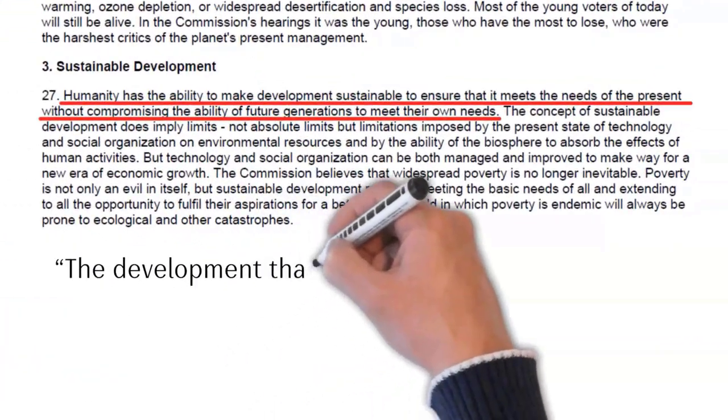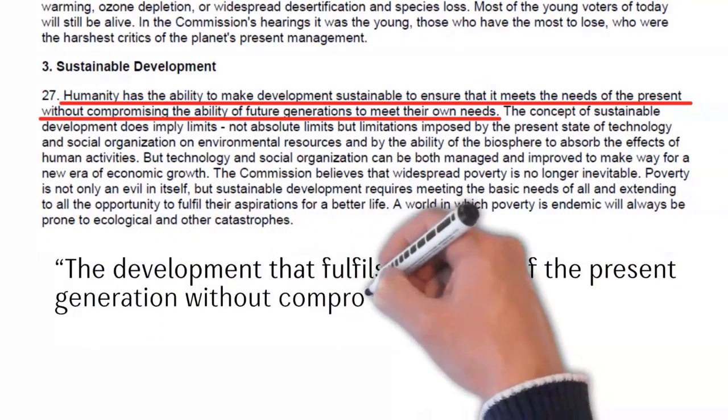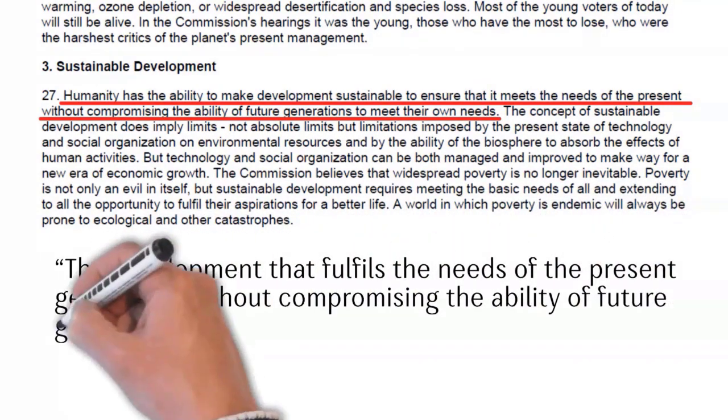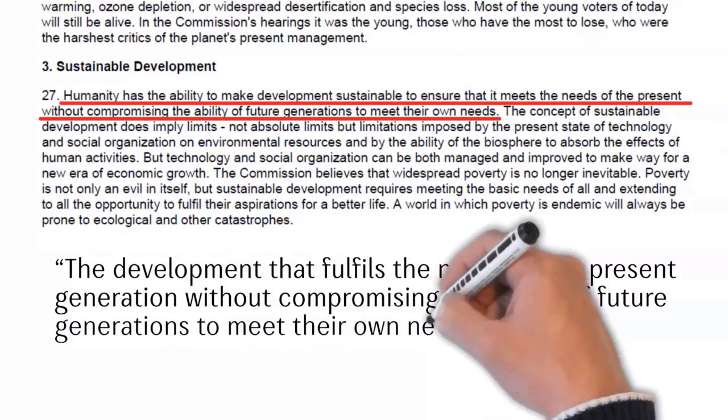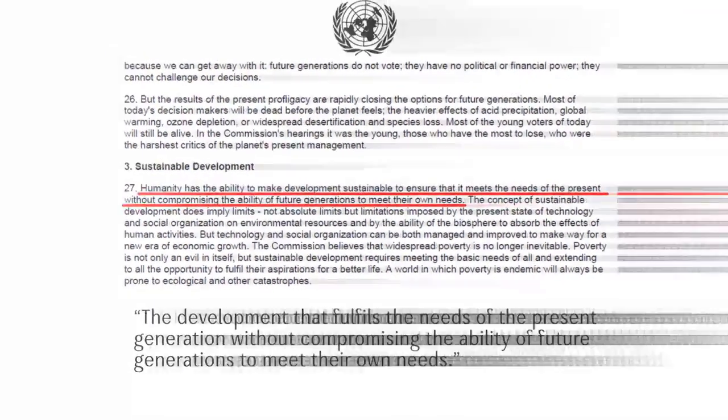The development that fulfills the needs of the present generation without compromising the ability of future generations to meet their own needs. The development thus achieved is sustainable development, and the property belonging to the processes and the system is called sustainability.